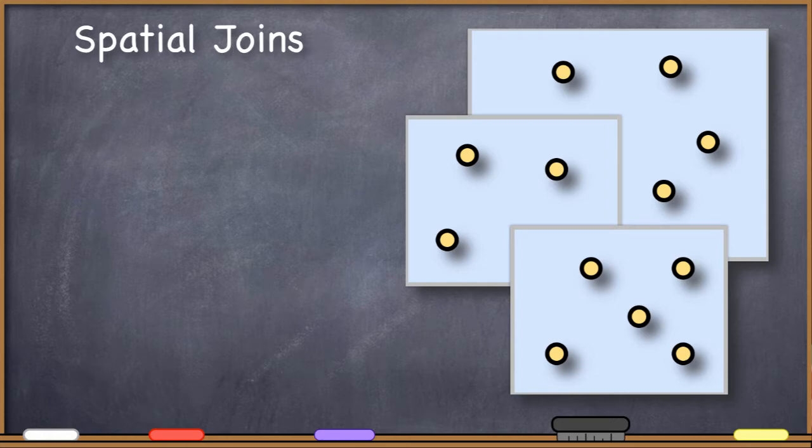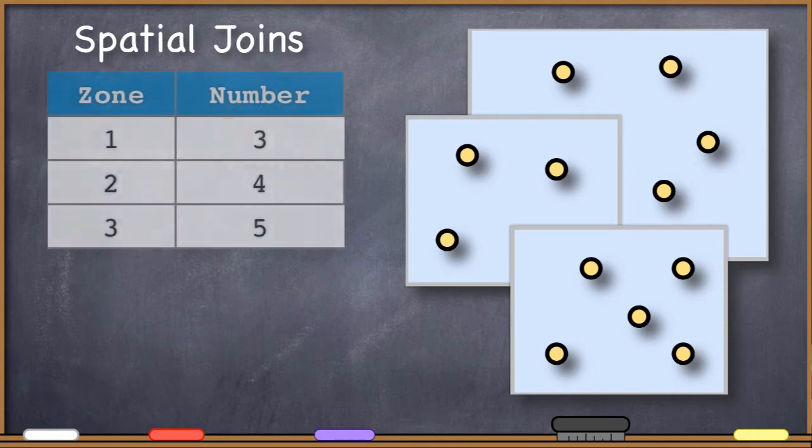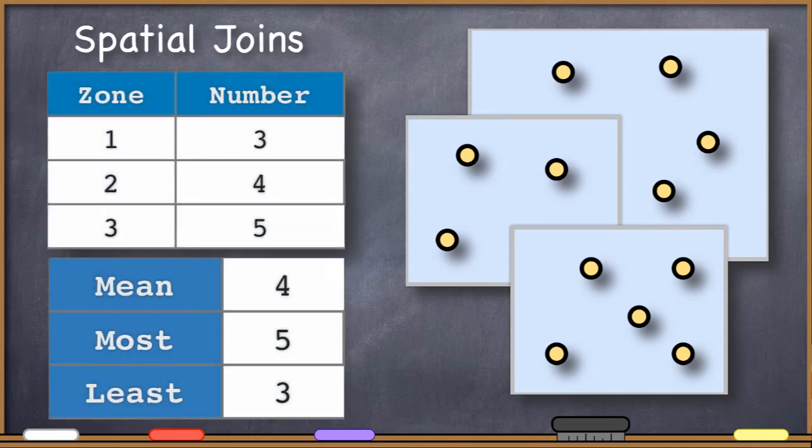So a spatial join is how you would do this. If you want to know any kind of summary information of data sets, including sums, averages, maximums, or minimums, based on attribute information and their location, then the spatial join is the procedure that you're going to use to get at this information.